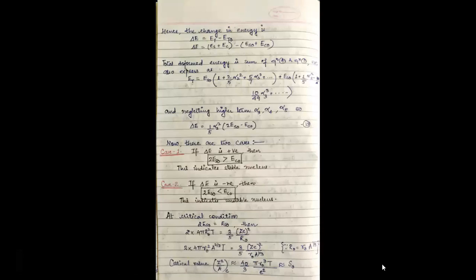Hence the change in energy is given by delta E equals ET minus ET0 which can be further written as delta E equals ES plus EC minus ES0 minus EC0.